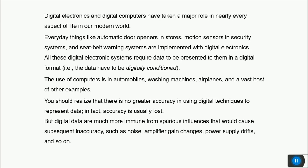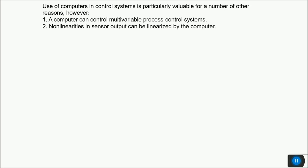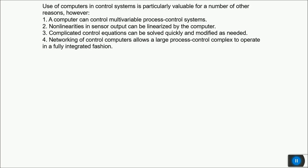The use of computers in control systems is particularly valuable for several reasons: a computer can control multi-variable process control systems; nonlinearities in sensor output can be linearized by computer by solving nonlinear equations; complicated control equations can be solved quickly and modified as needed; and networking of control computers allows a large process control complex to operate in a fully integrated fashion.